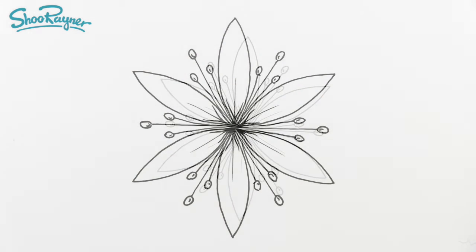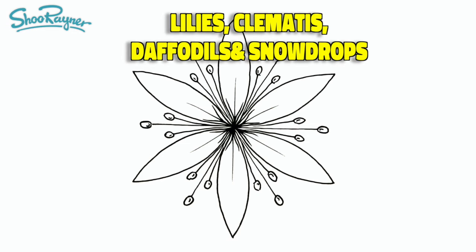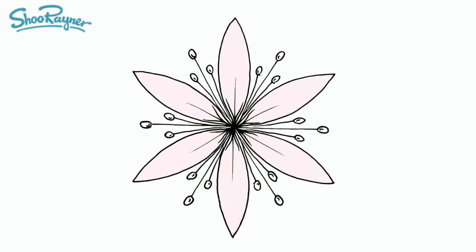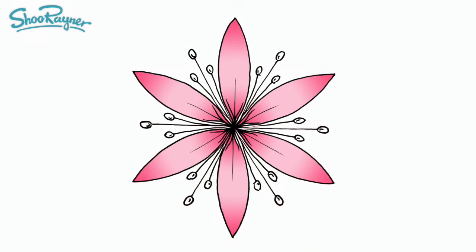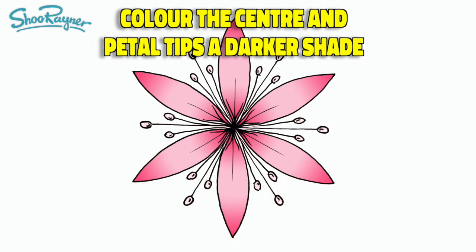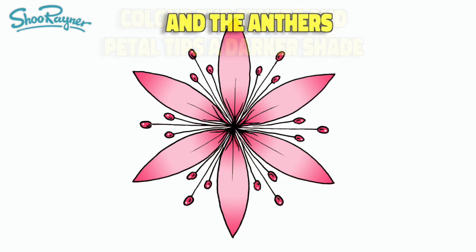Many flowers have six petals like clematis, lilies, daffodils, snowdrops. So you can adapt this pattern if you like. Choose a basic colour to fill the petals and then with a darker colour shade in the centre and the tips of the petals and the anthers.